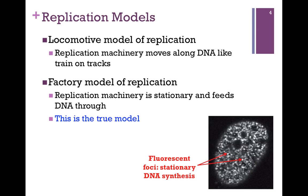There are two possible models for replication. First is the locomotive model, where the replication machinery binds to the double-stranded DNA and moves along the DNA double helix like a train on tracks. It separates the DNA as it goes and synthesizes it. In this case, the double-stranded DNA is helical, so the motion of that machine would be a corkscrew motion.